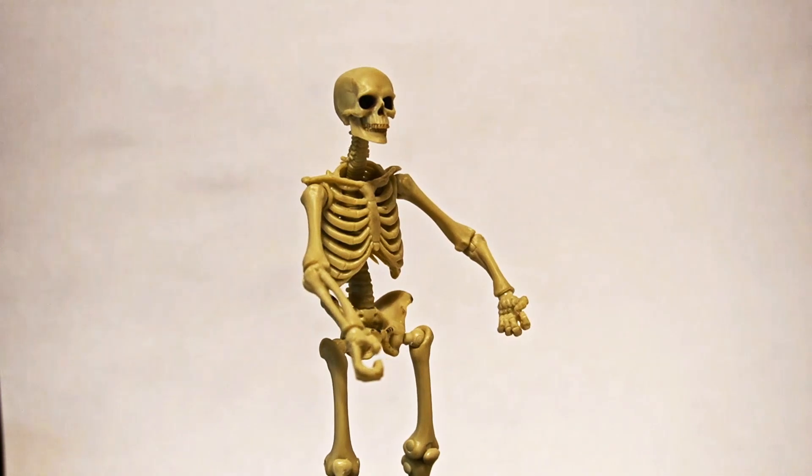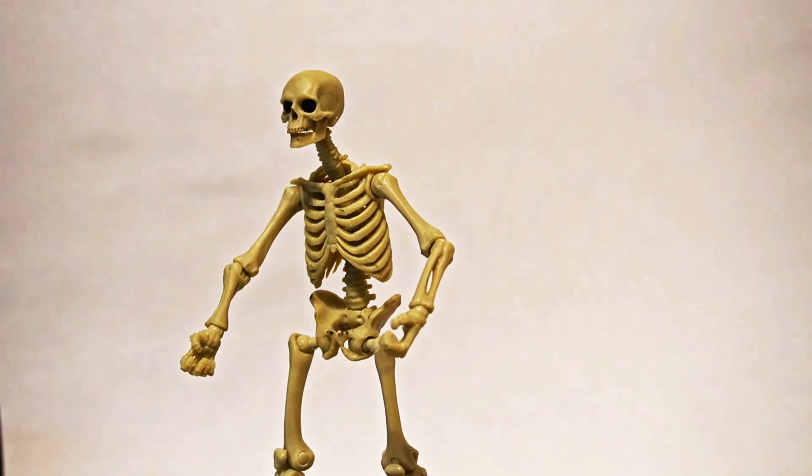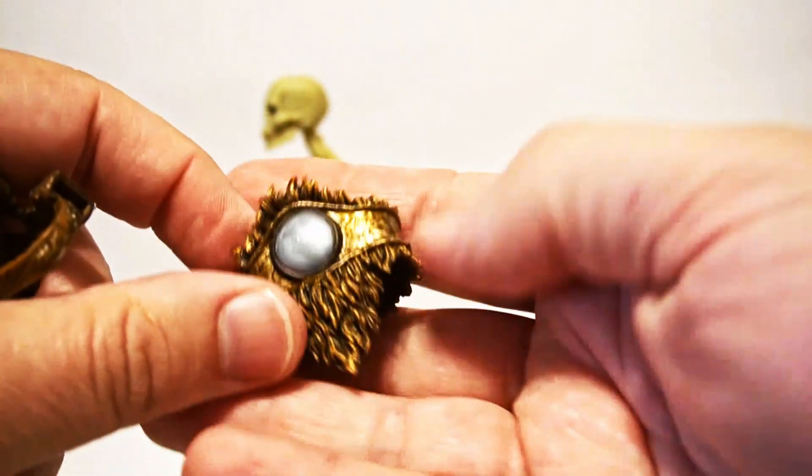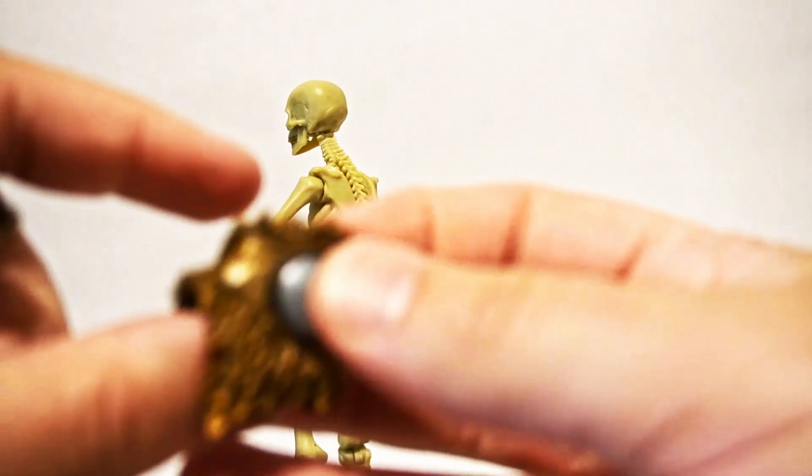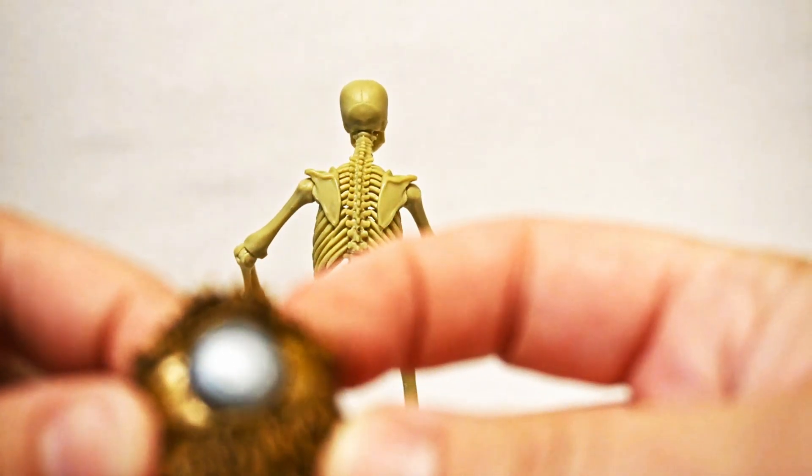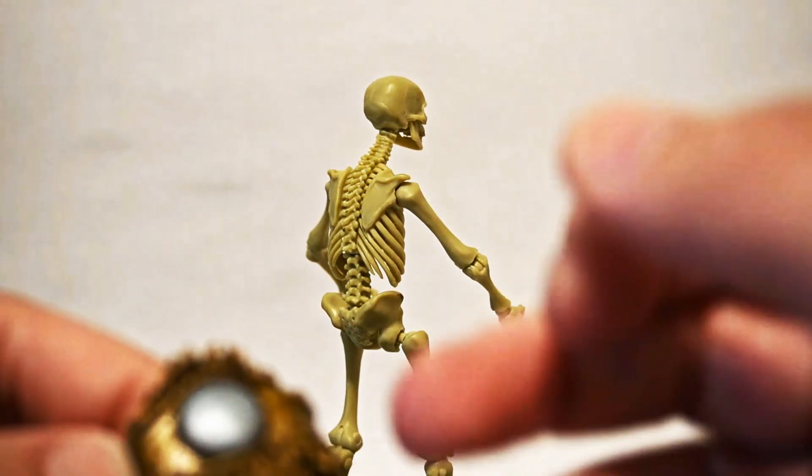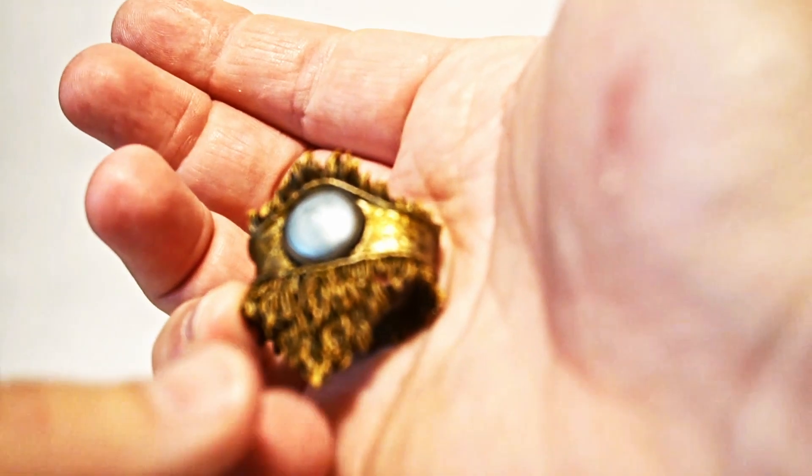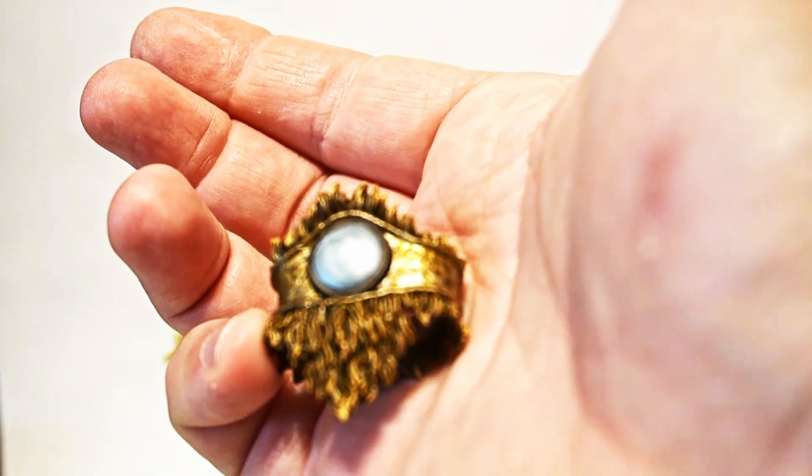But before we get into his articulation, let's go over some of the accessories. So obviously he comes with some clothing. This is his little kind of loin cloth or fur belt. The paint apps on this are excellent. You can see on there, there are scuff marks, there are dents. We do have kind of a metal sheen on the actual metal portions and then we have some various colors to make up the fur.